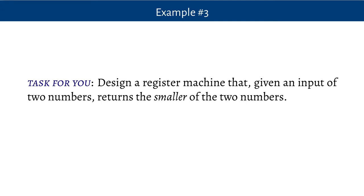Register machines are quite simple. They just have two different kinds of instructions: increment a register and decrement a register. The decrement is the only place where we have any choice — we do something if the register is non-empty and we can do the decrement, and we do something else if the register is already empty. It turns out you can compute lots of things using register machines. A task for us to do in class will be to design a register machine that, given an input of two numbers, returns the smaller of those two numbers as its output.